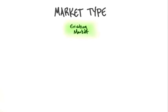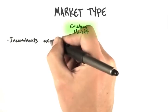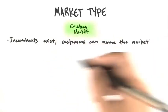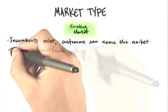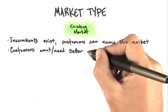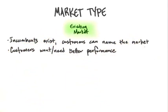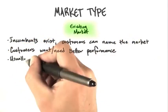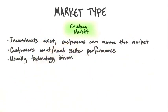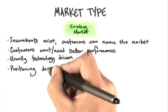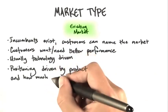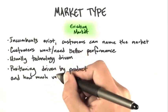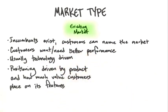A little further definition: in an existing market, incumbents exist, customers can name the market, customers want or need better performance, and it's usually a technology-driven play. Positioning is driven by the product and how much value customers place on its features.